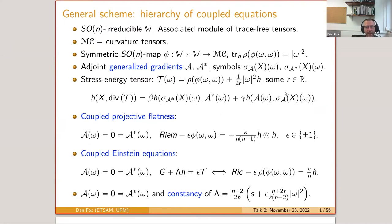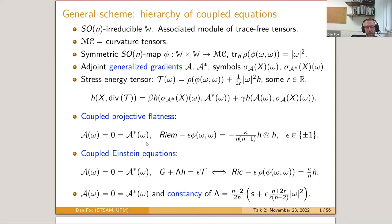If one accepts that, then one has this hierarchy of equations. The claim is that this hierarchy makes good sense in the cases I'm dealing with: any symmetric differential form omega, and the case of a completely symmetric tensor where A is either the conformal Killing operator or the trace-free Codazzi operator. The three equations are: a generalized coupled projectively flat equation, Einstein equations, and constant scalar curvature—that's the way to think about them.